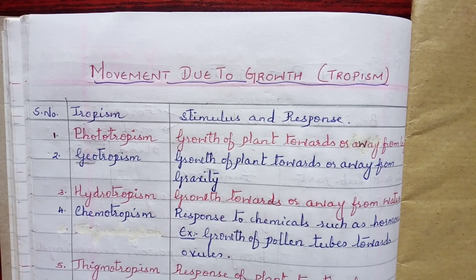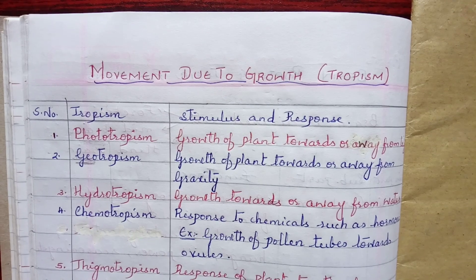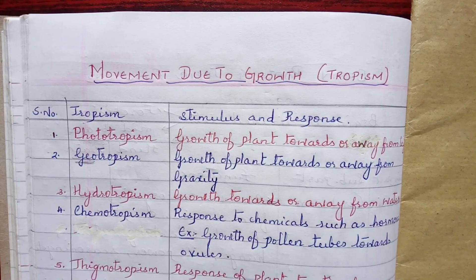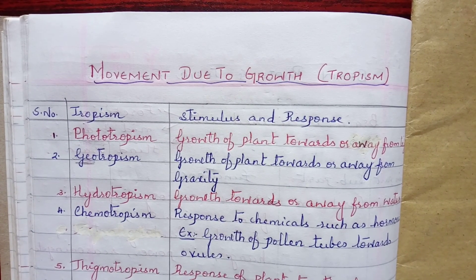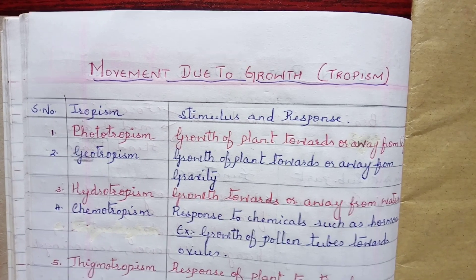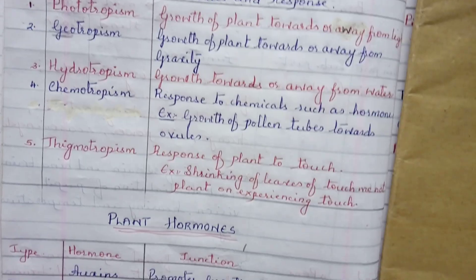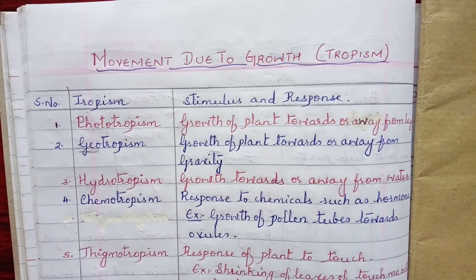Hey everyone, welcome back. In today's video we are going to talk about plant movement due to growth, that is response to stimulus of the plant — tropisms. We're also going to talk about plant hormones.